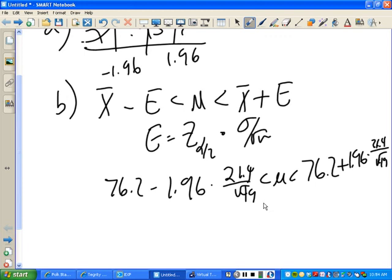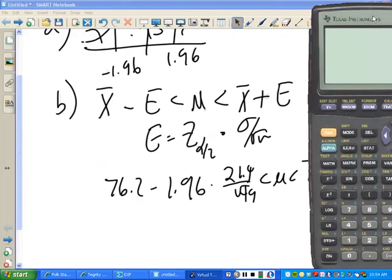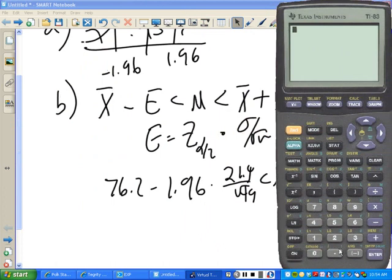Now, with that, you could do that in your head if you wanted to, or you could just be a commoner and use the calculator. Here, 76.2 minus 1.96 times 21.4 square root of 49. Okay.